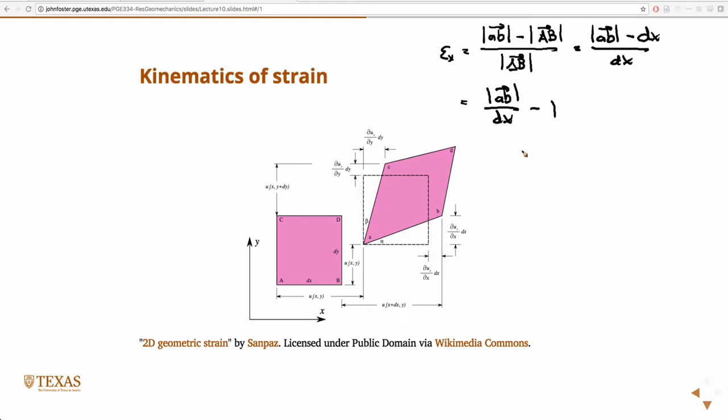So, let's just write down what the vector AB is in terms of those guys. The position of B is UX, this is UX, plus DX, plus the change in U, partial UX, partial X, DX.